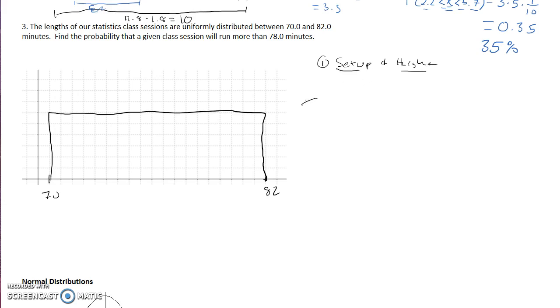So we got our setup. Now we need to go find that height. Remember that we know underneath our entire distribution our area is 1. We're going to go find this base as well. How do we find the base? We're going to find this distance right here by doing 82 minus 70 which gives us 12.